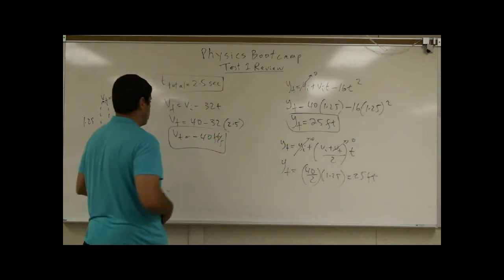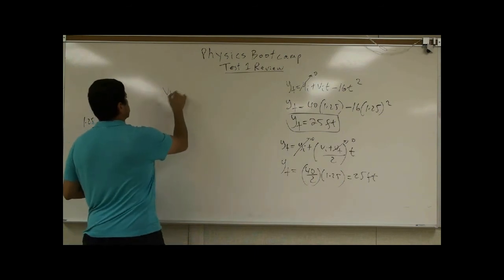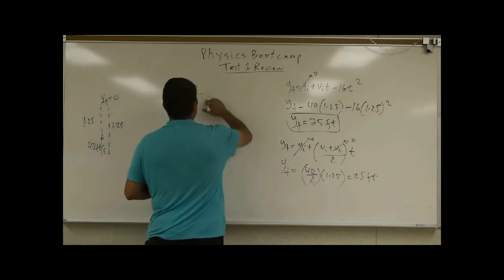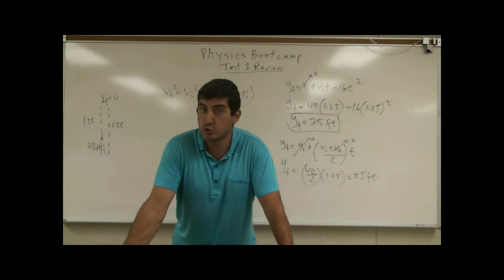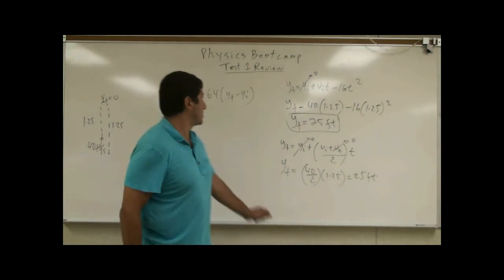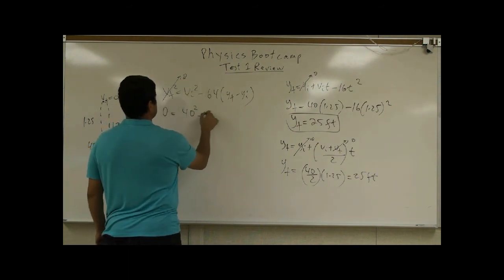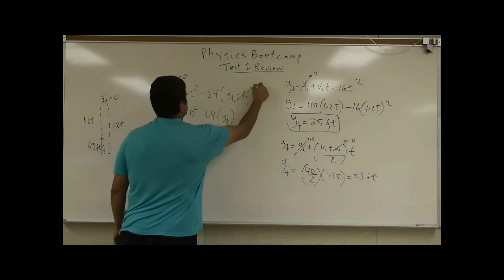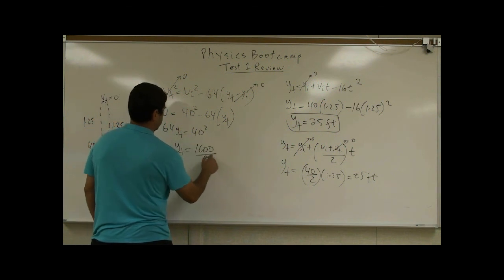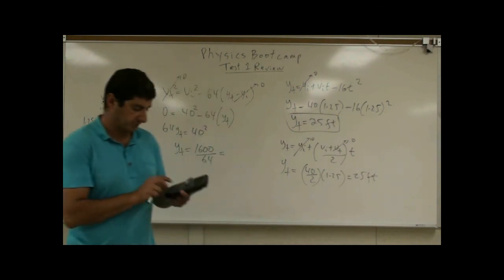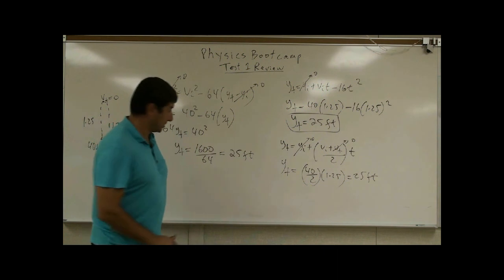And the third way of getting it, again, is going to be with the other equation: V final squared is equal to V initial squared minus 64 Y final minus Y initial. Why 64? Because the V final squared is equal to V initial squared plus 2 times the acceleration, 2A. So this is going to be A is 32, negative 32. 2A is negative 64. So the final velocity is 0. Initial velocity is 40. Y final we don't know. Y initial is 0. Again, this one goes over here. 64 Y final. 40 squared. Y final is equal to 1600 over 64. What's 1600 over 64? 25 feet. Wow. See? All of them, same answer.